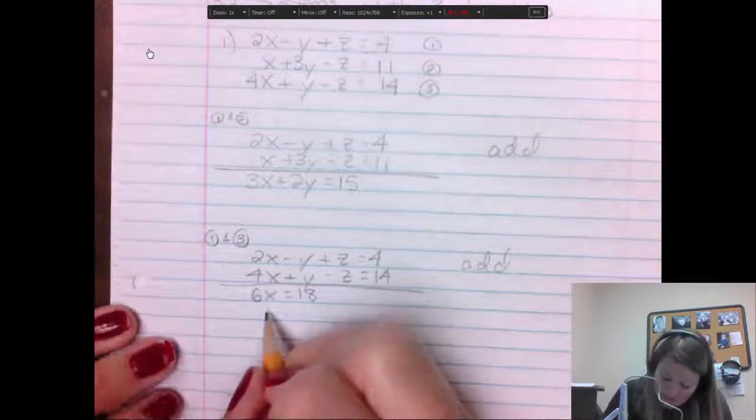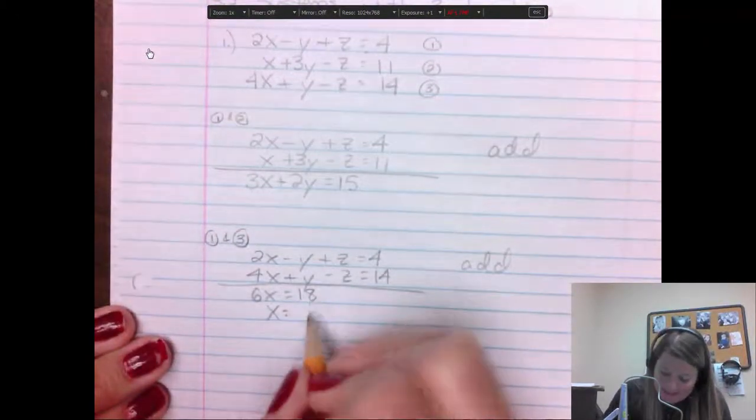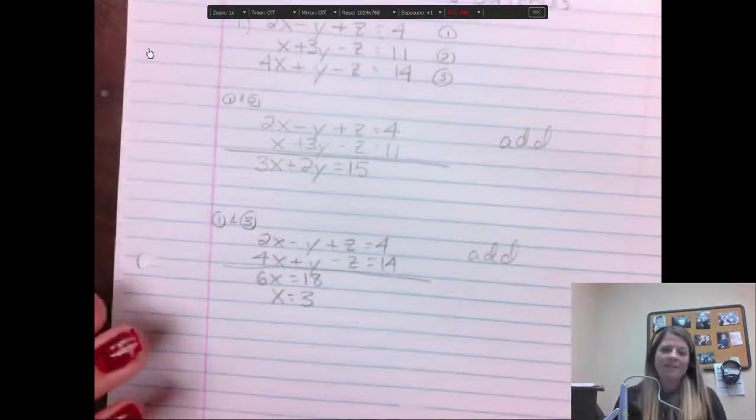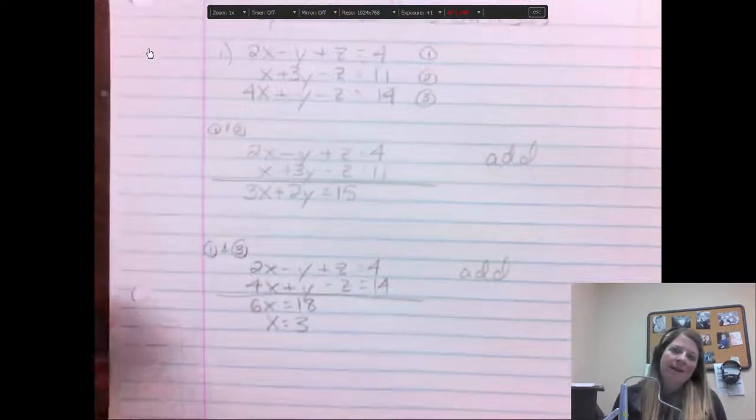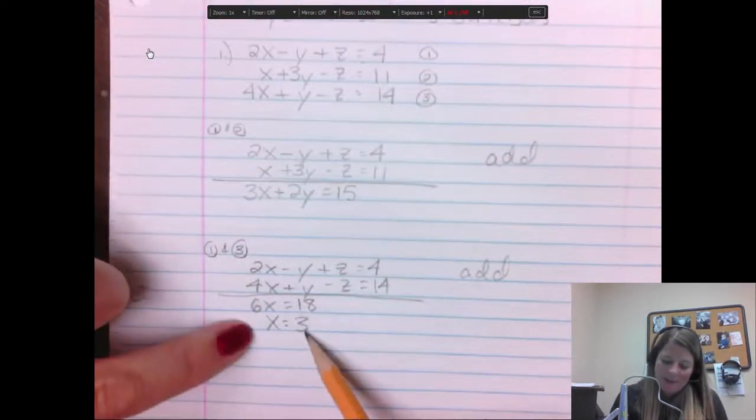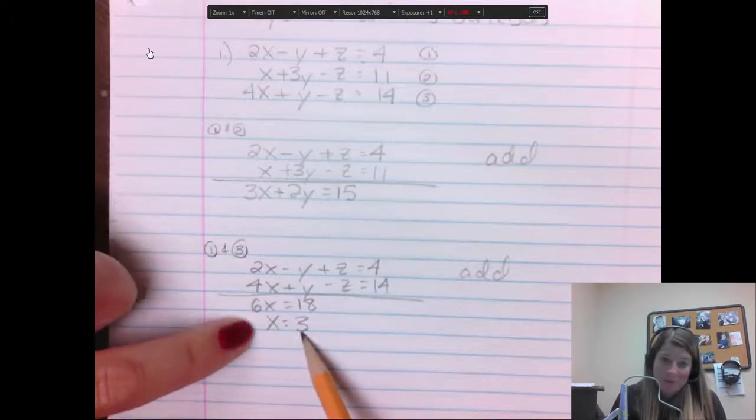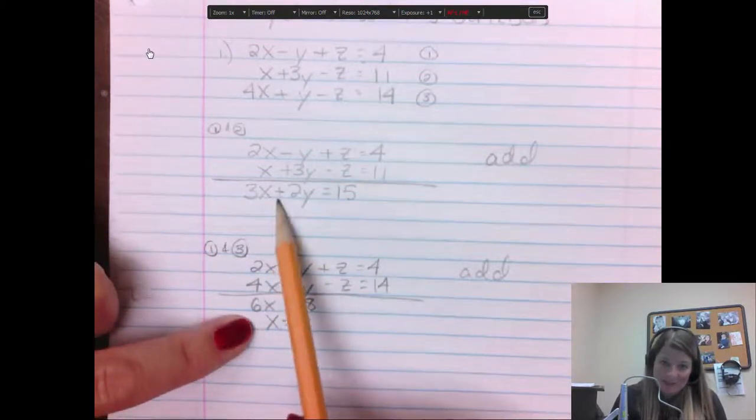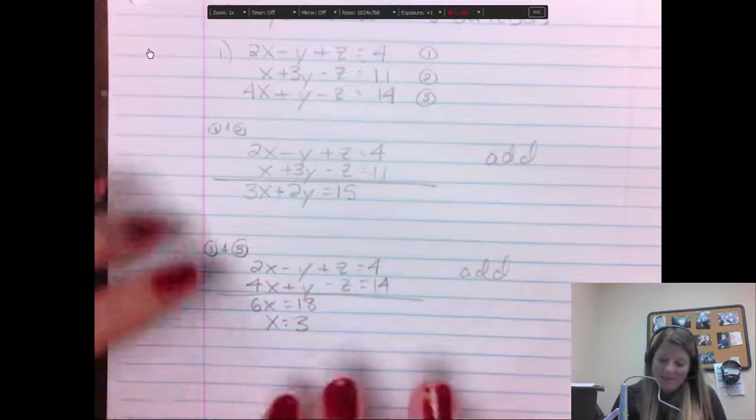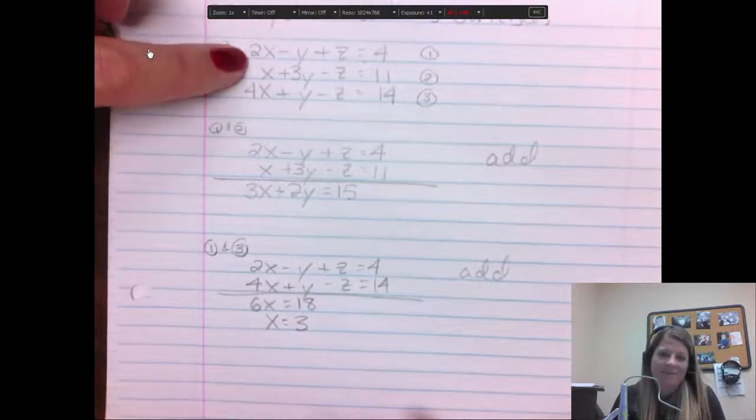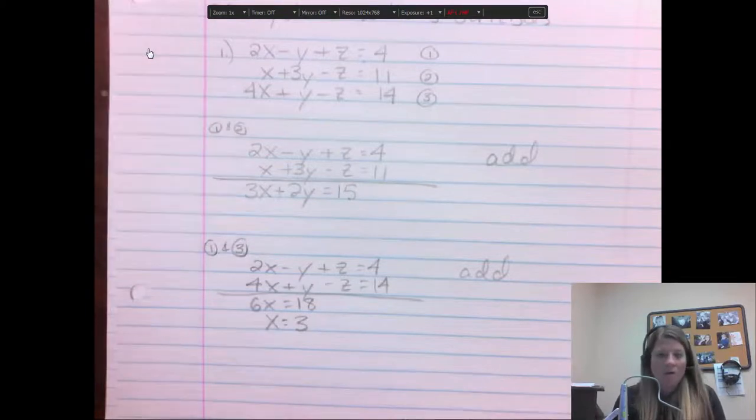So the first one is 2x minus y plus z equals 4. And the third one is 4x plus y minus z equals 14. And again, we're adding them together. So I'm going to add 4 and 2 make 6x. The y's eliminate here and the z's. That's kind of cool. And then 14 and 4 make 18. I can actually find the x by dividing both sides by 6. And I already see the x value. So that's why I said I've got to show you two equations. Because this one, the y's and z's eliminated. So this one's really already, we have x.